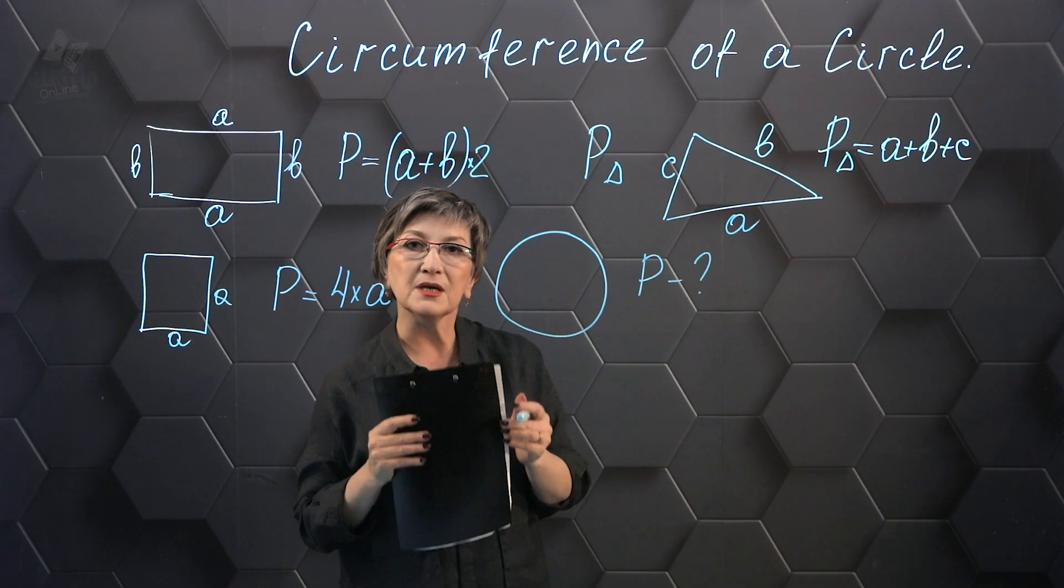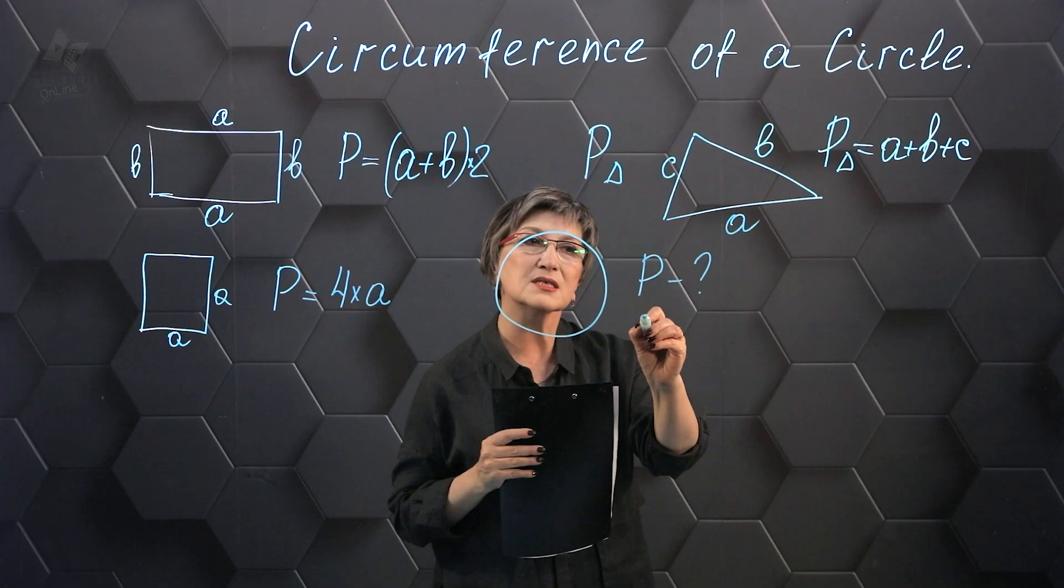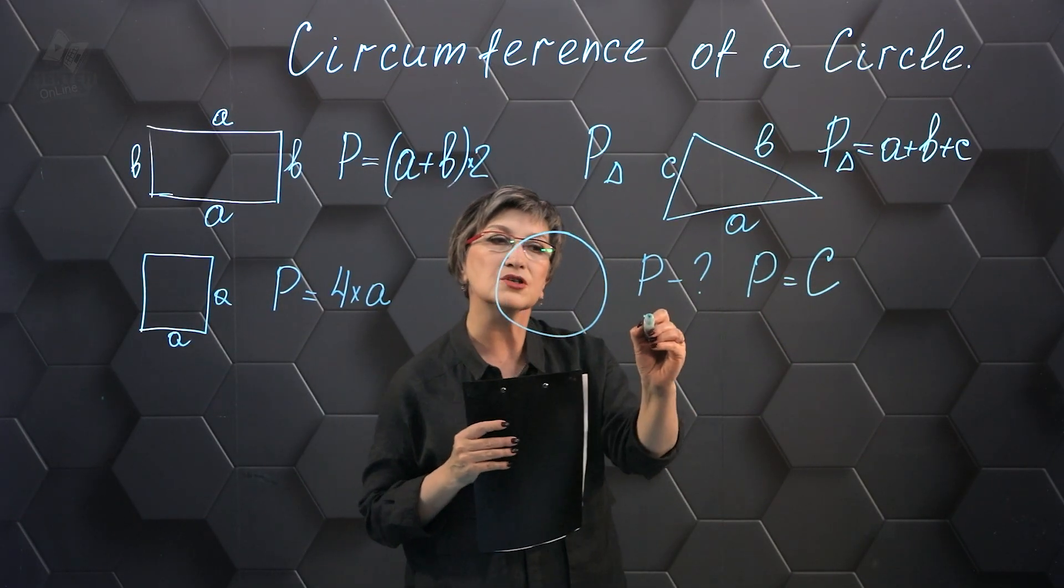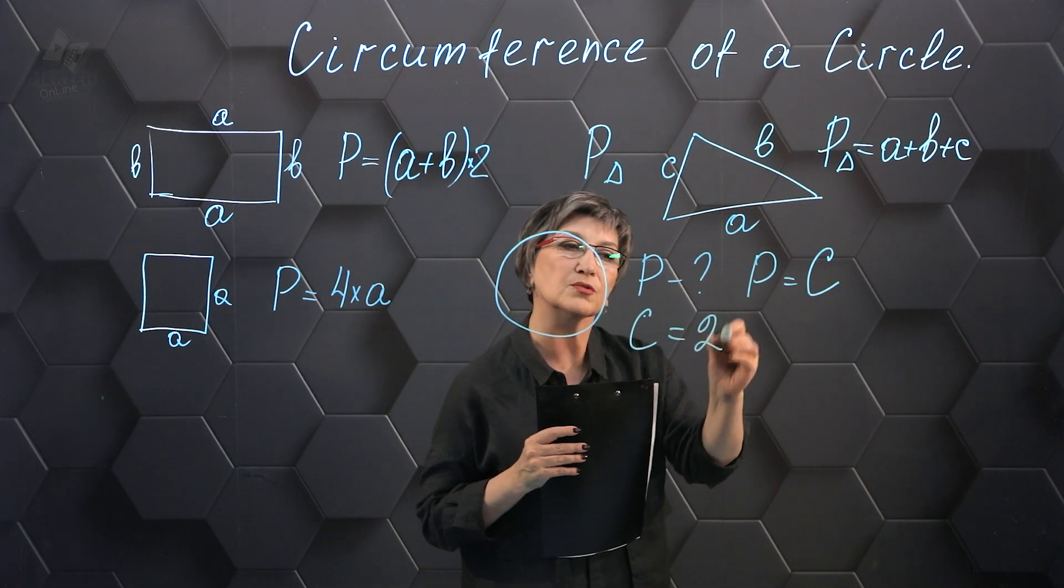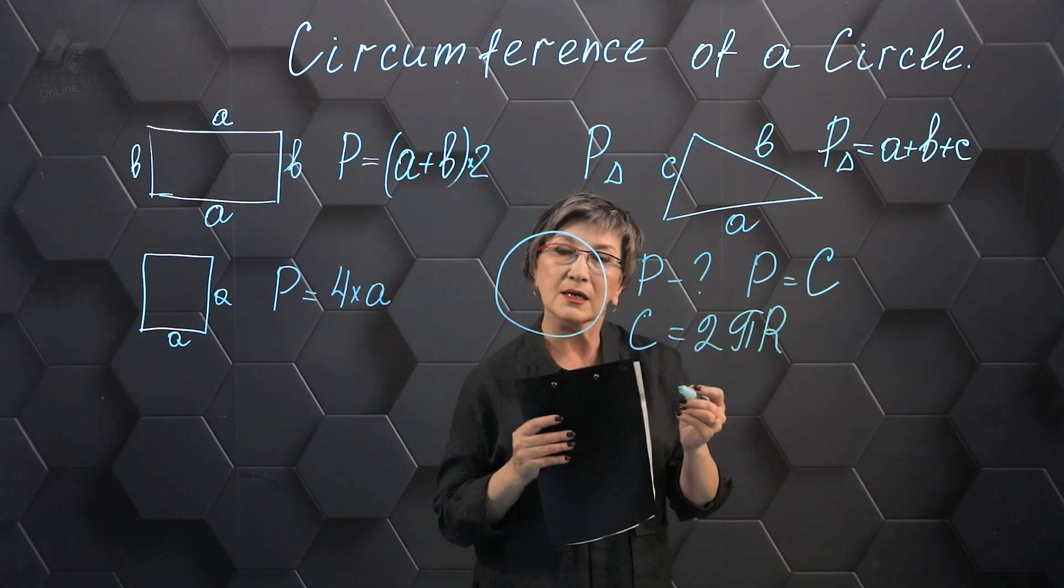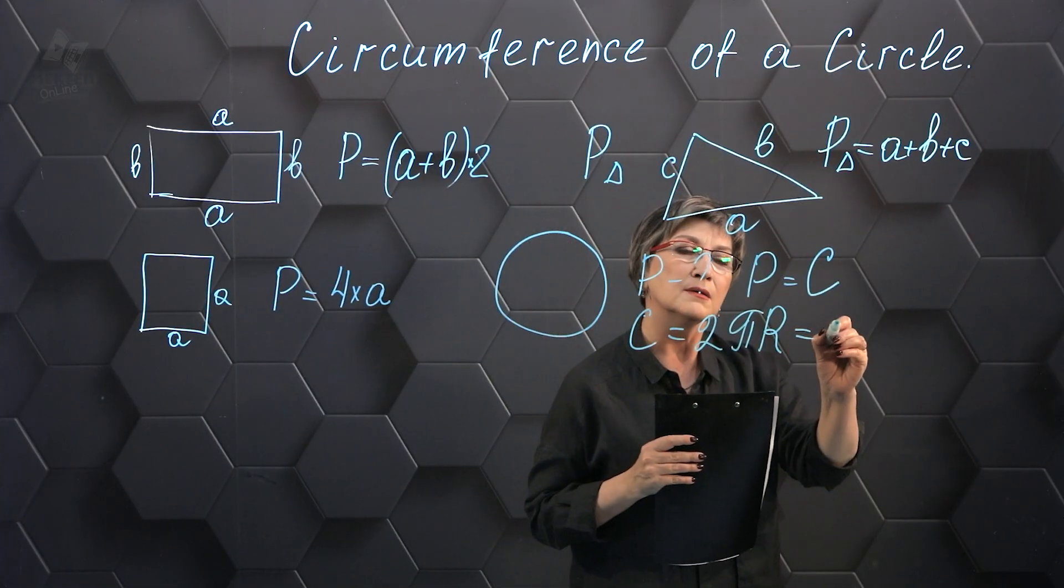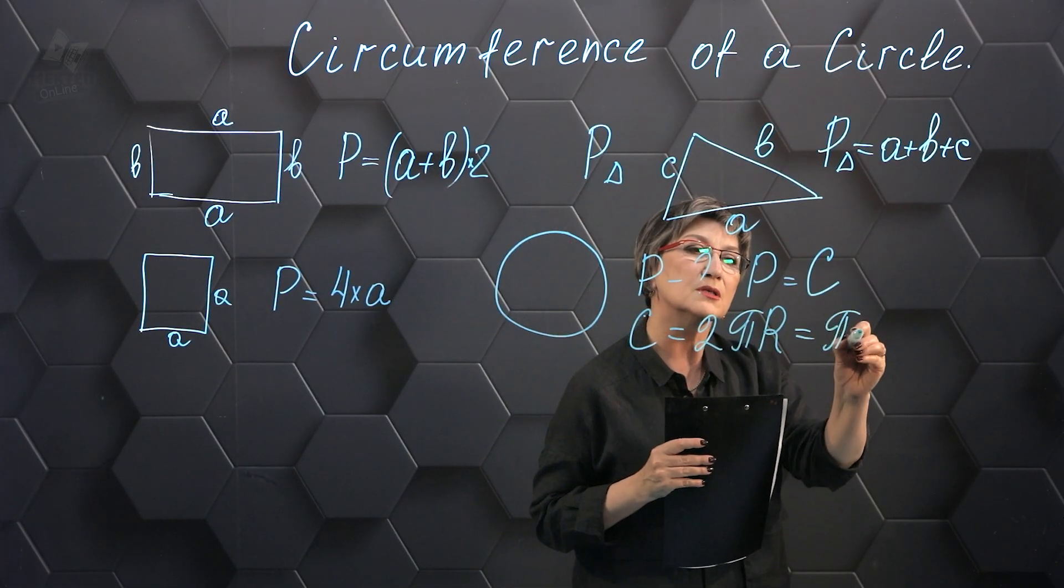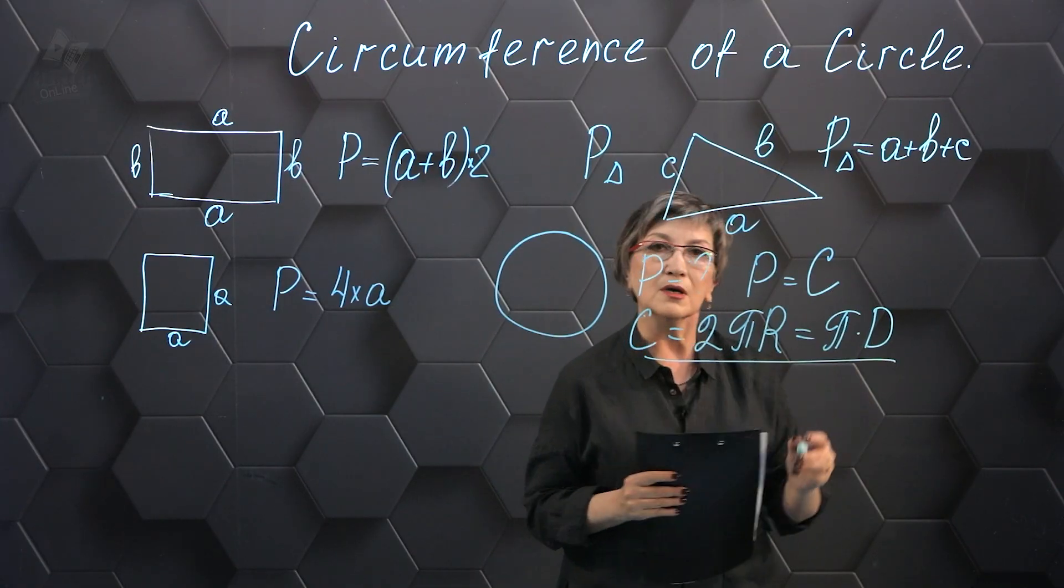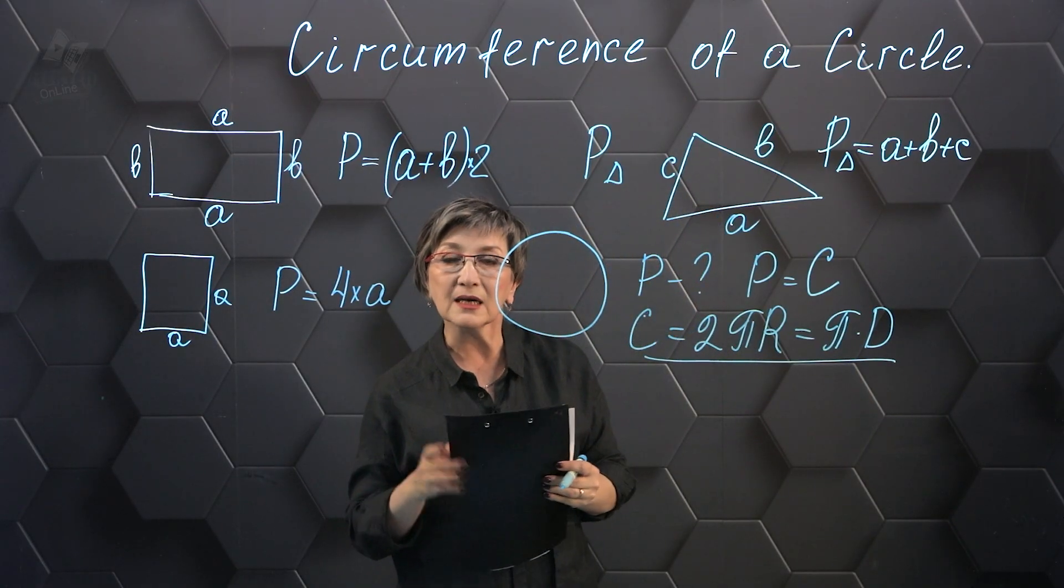In math, the perimeter of a circle is called the length of the circle. And the length of a circle is calculated using the following formula: 2πR or π times the diameter. This is the formula when we need to find the length of a circle.